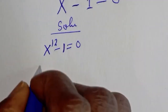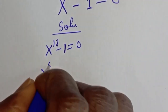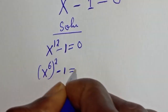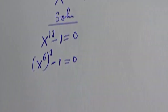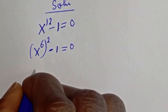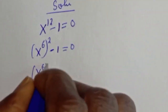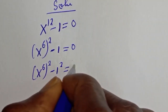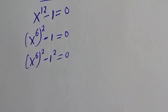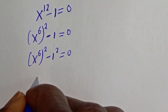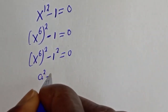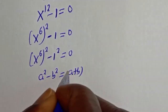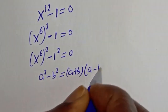s raised to power 12 can be written as s raised to power 6, squared, minus 1 is equal to 0. So this is the same thing as s raised to power 6 squared minus 1 squared is equal to 0. If you look at this, this is in the form of a perfect square difference. If you have a squared minus b squared, this is equal to a plus b, bracket, a minus b.